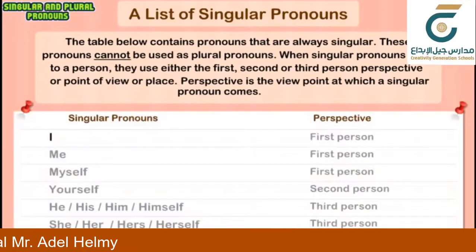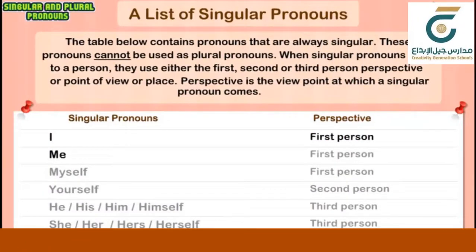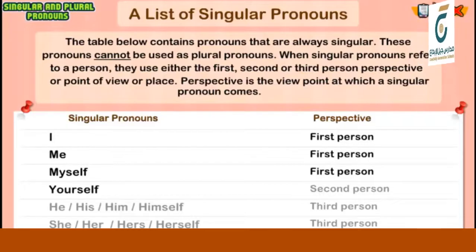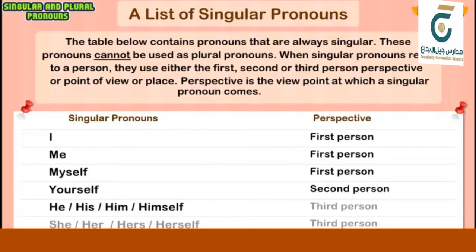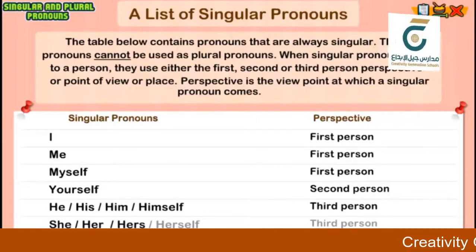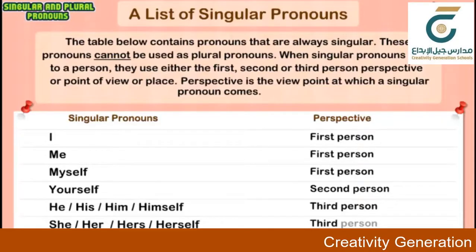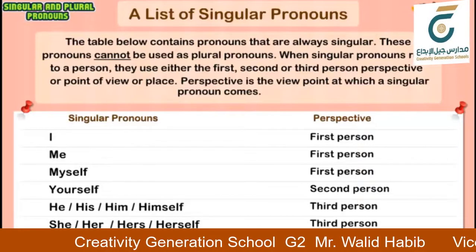First person singular pronouns: I, me, myself. Second person: yourself. Third person: he, his, him, himself; she, her, hers, herself; it, itself.